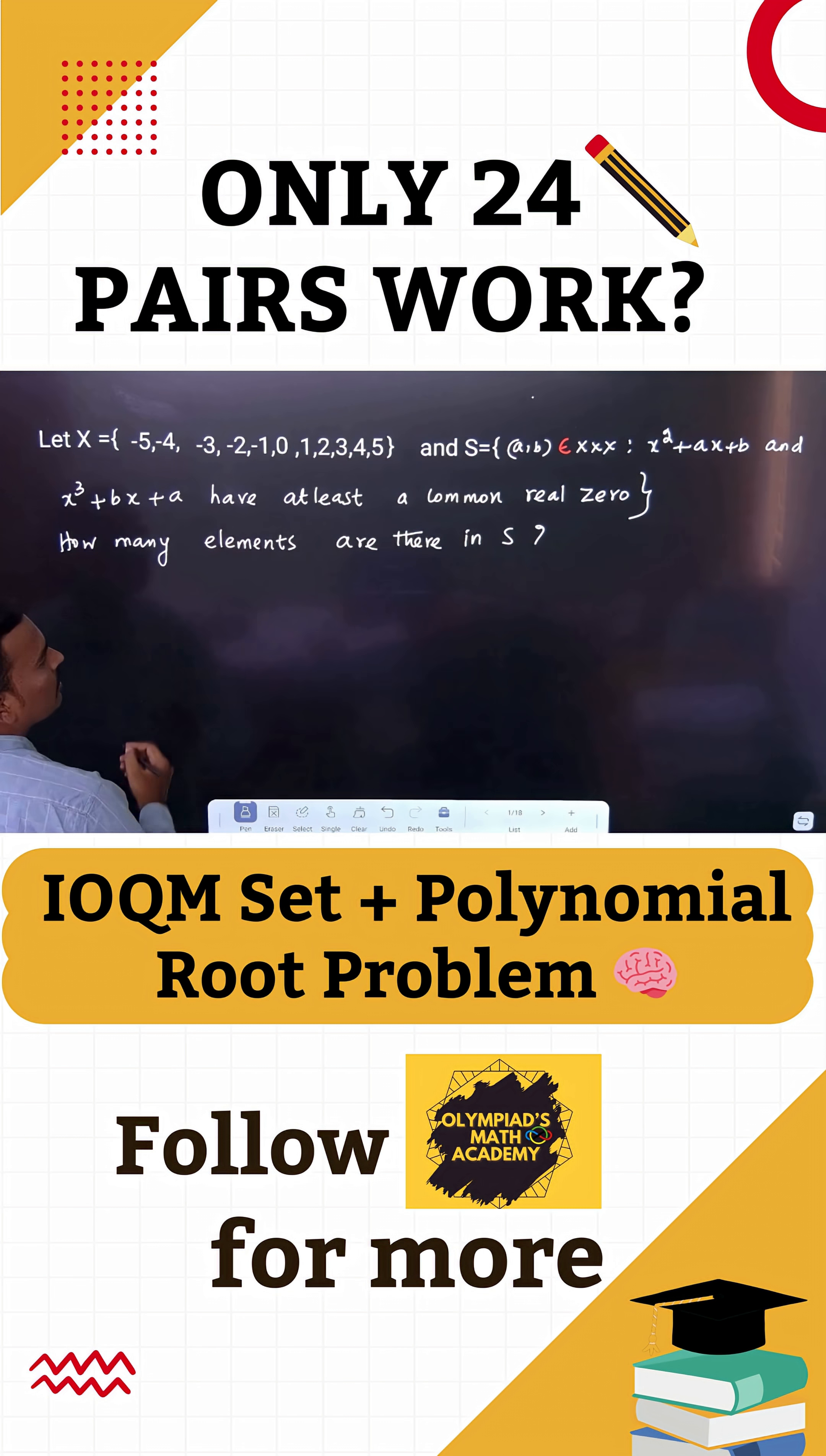Let us take alpha as the common zero of these two equations. Alpha squared plus A alpha plus B equals 0. Similarly, alpha cubed plus B alpha plus A equals 0. Multiply the first equation by alpha, then you can eliminate this.